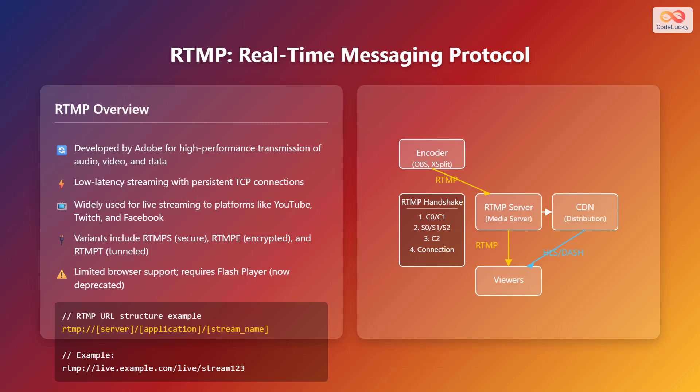Here is an example of an RTMP URL structure. It starts with RTMP://, followed by the server address, application name, and stream name. For example: rtmp://live.example.com/live/stream123.